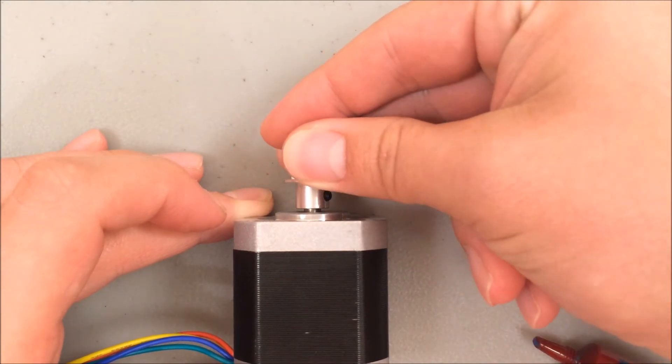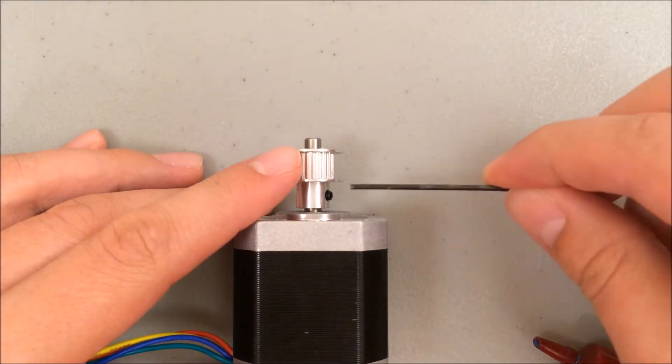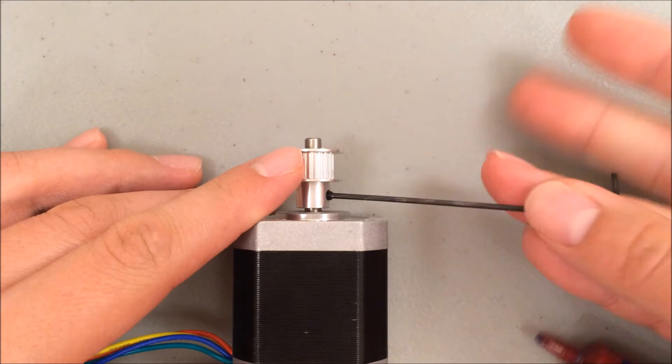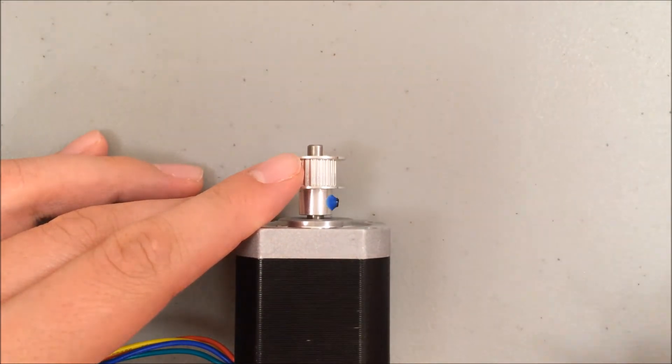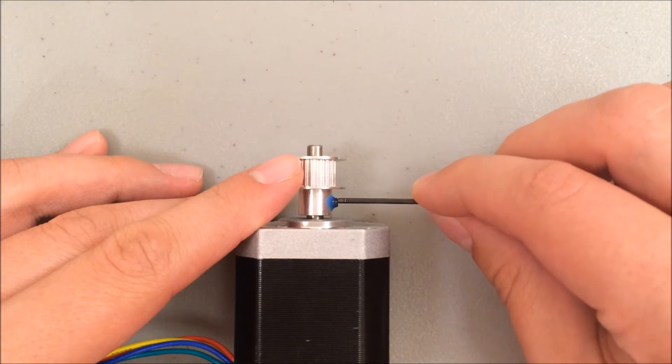Then I'm going to turn it so that I can reach the other set screw, loosen that set screw, apply the ThreadLocker and tighten it in place.